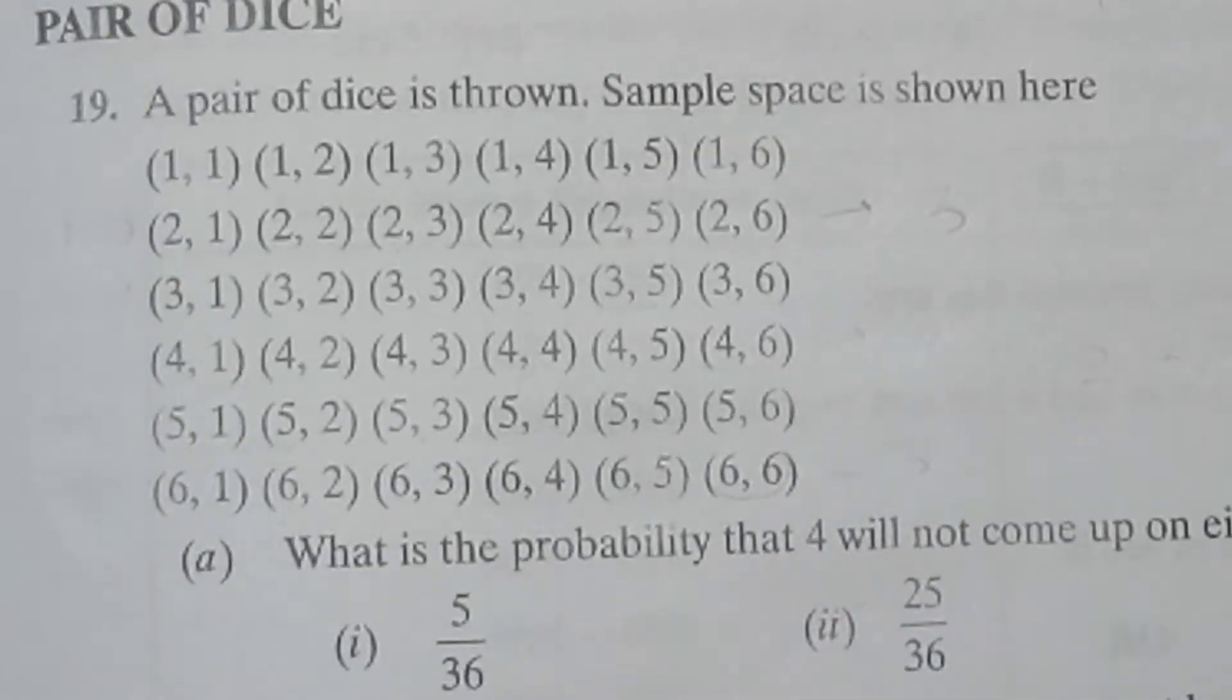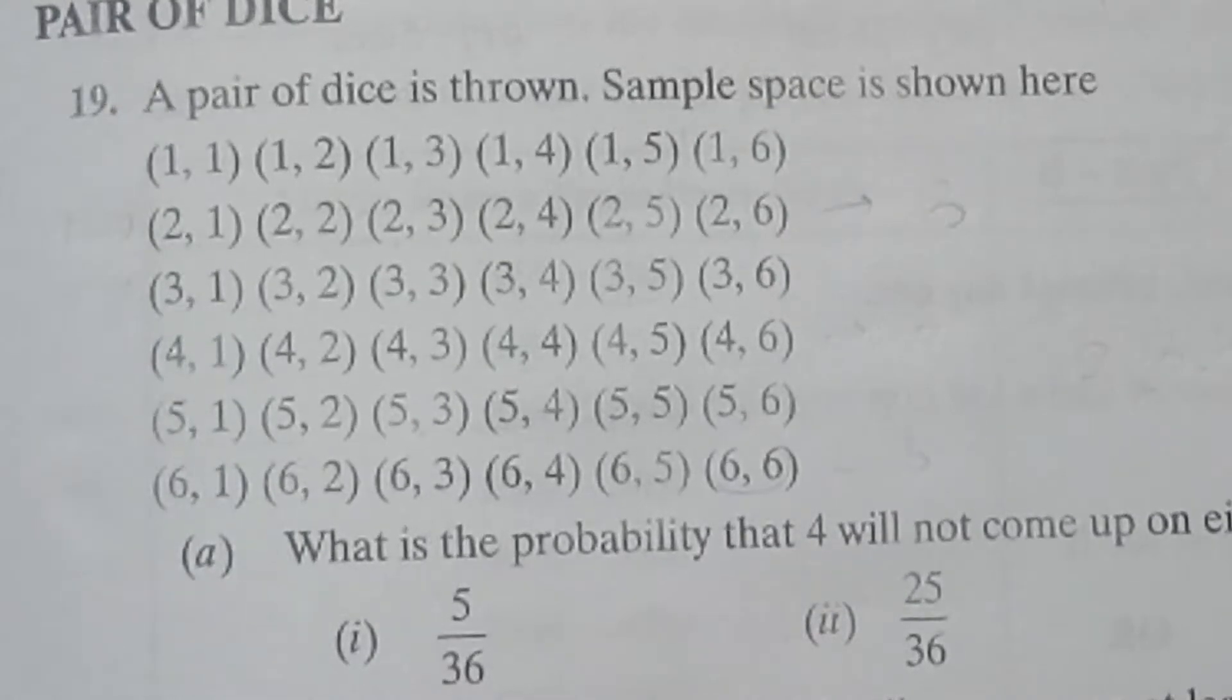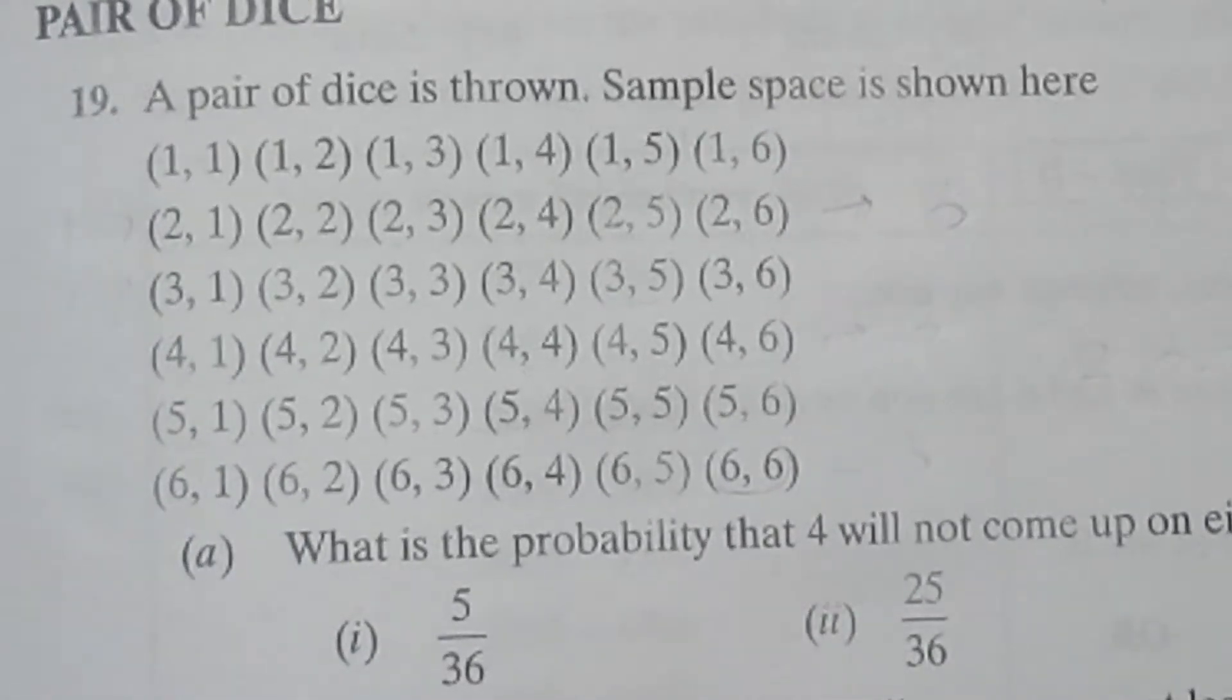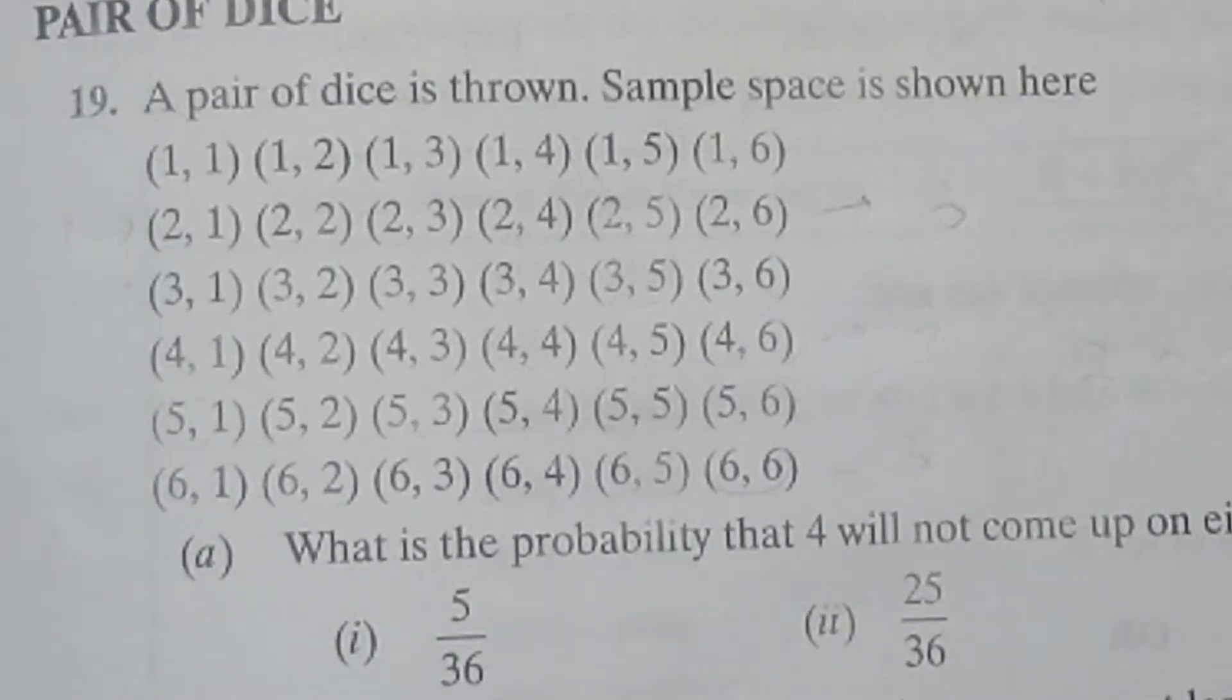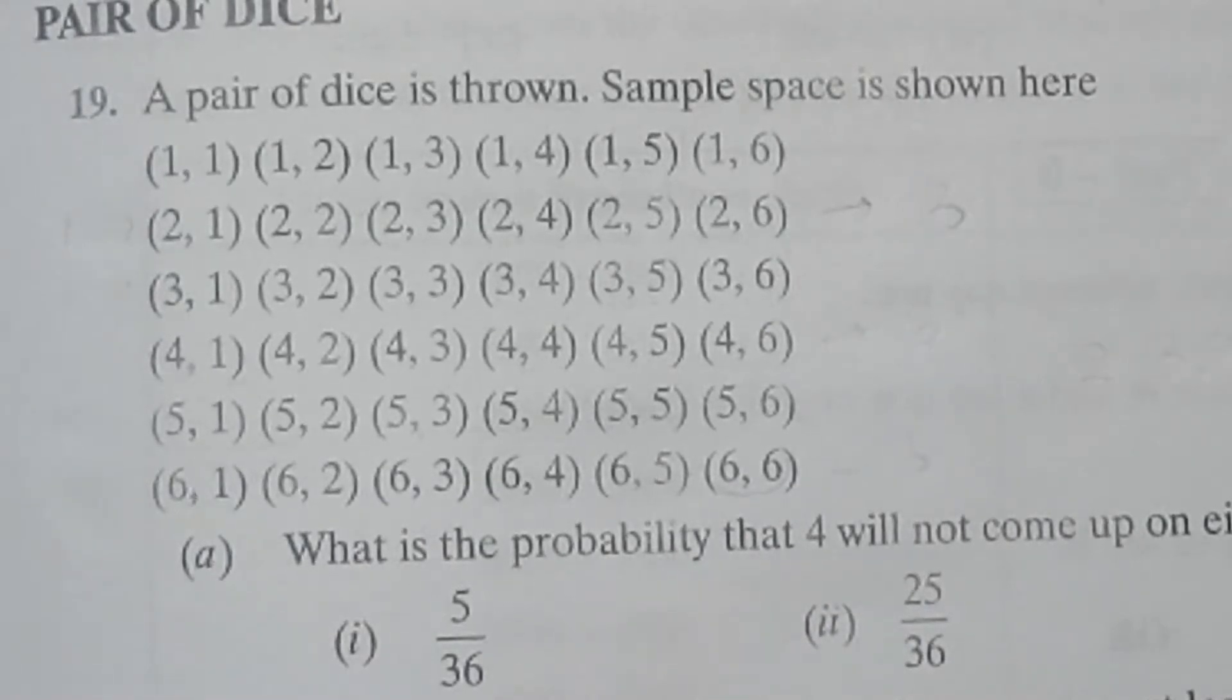Students, this is the case study question of Chapter Probability. It is given that a pair of dice is thrown and the sample space is also given here. So this is the sample space for a pair of dice. You can see this sample space. We already know this.